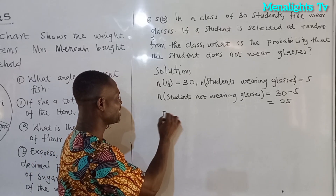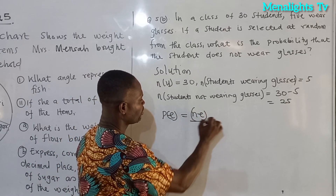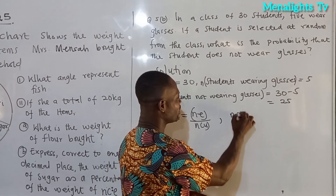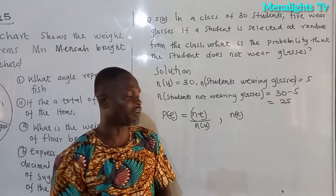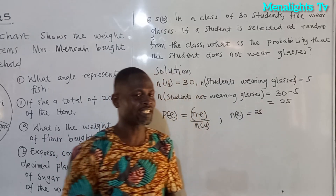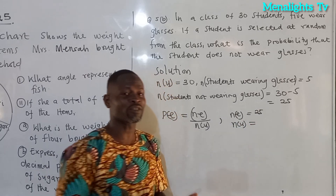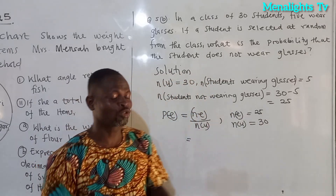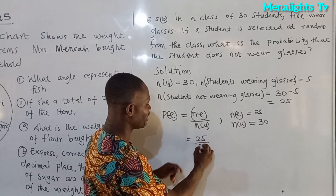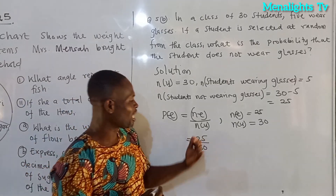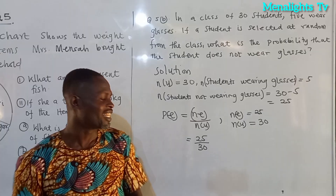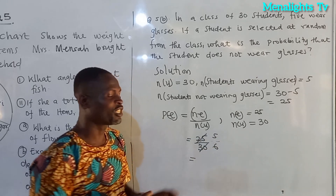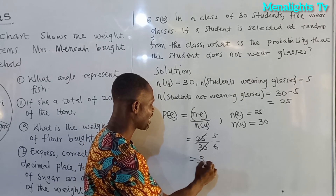To find the probability, we use: probability of an event equals number of favorable outcomes over total outcomes. The number of students not wearing glasses is 25, and the total number of students is 30. So we have 25 over 30. Since 5 goes into 25 five times and into 30 six times, the probability of a student not wearing glasses is 5 out of 6.